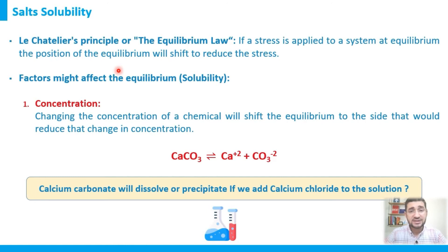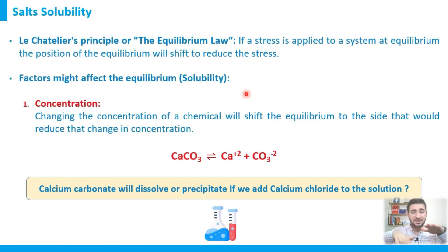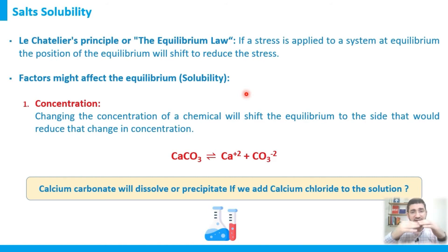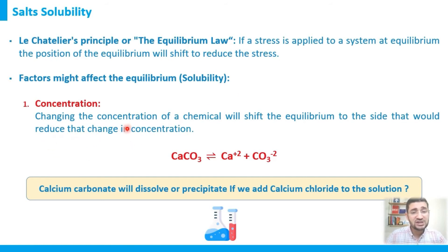A second important principle is Le Chatelier's principle, or simply the equilibrium law, which states that if a stress is applied to a system at equilibrium, the position of the equilibrium will shift to reduce that stress. The stress can be a change in concentration or temperature. Changing the concentration of a chemical will shift the equilibrium toward the side that reduces that change.